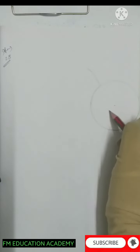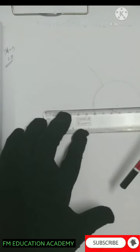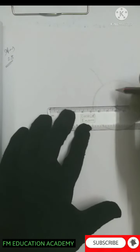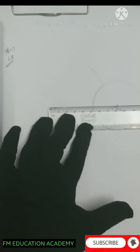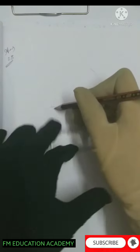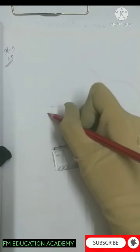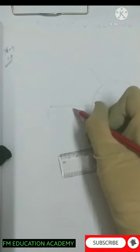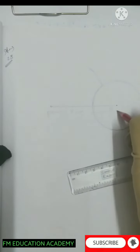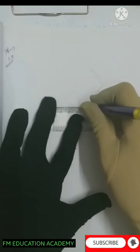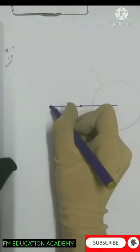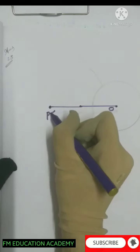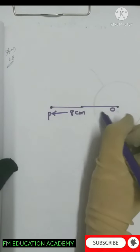Let the center be O and the radius is 3 centimeters. There is a point which is at a distance of 8 centimeters from the center of the circle. This point is P, this is center O, and this distance OP is 8 centimeters.